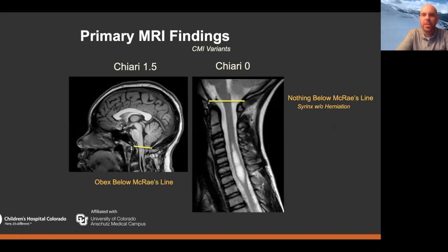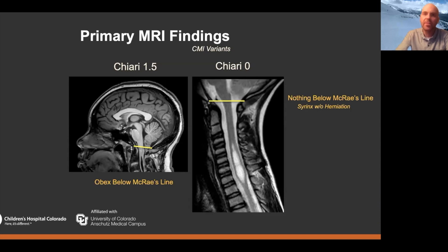I'll briefly mention Chiari 1.5 and Chiari 0 because you'll see them come up. The processes of how they're managed are very similar to Chiari 1. The distinction between Chiari 1 and 1.5 is really the position of the obex. Chiari 1 is technically defined by herniation of the cerebellar tonsils five millimeters below McRae's line — the line joining the basion to the opisthion at the foramen magnum. With Chiari 1.5, the obex itself is positioned below that line, representing a shifting of the brainstem downward. Sometimes the term Chiari 1.5 is blended with 'complex Chiari,' which can be imprecise in the language.